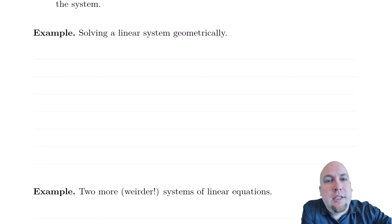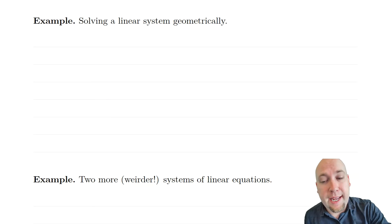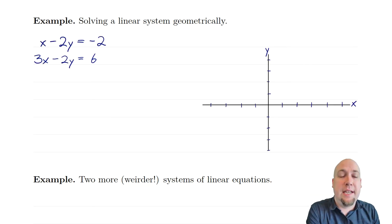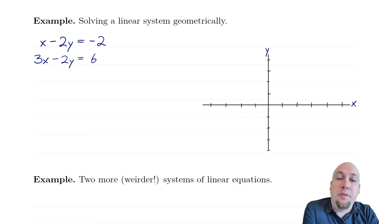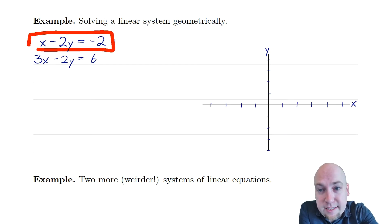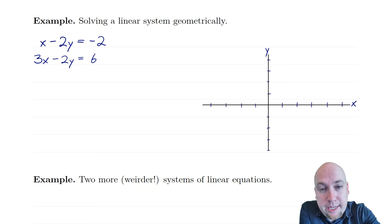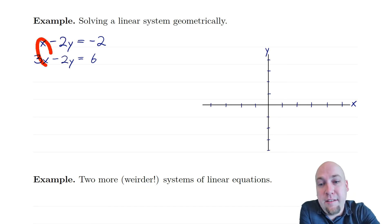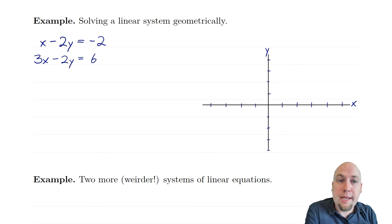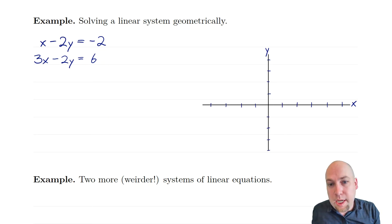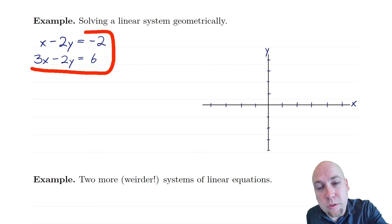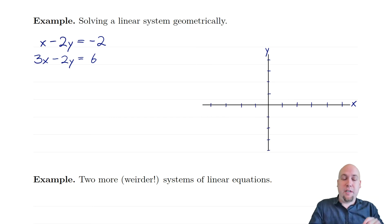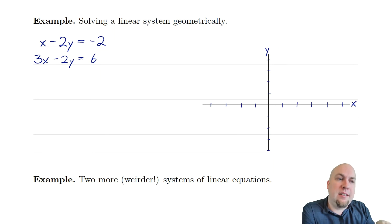Let's think about this geometrically to get a feel for how systems of linear equations behave. Starting with a simple example — two equations and two variables. Each of these equations is actually the equation of a line. I want to find values of x and y that make both equations true simultaneously, so I want both to be true when I plug in that value of x and y.